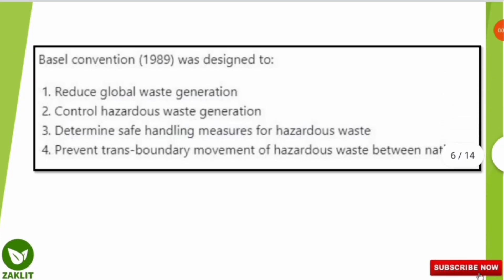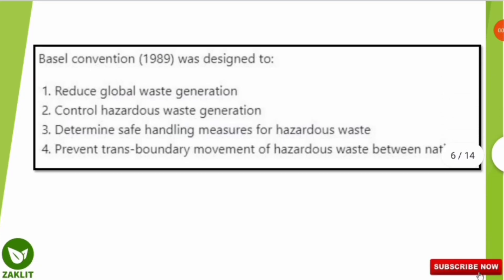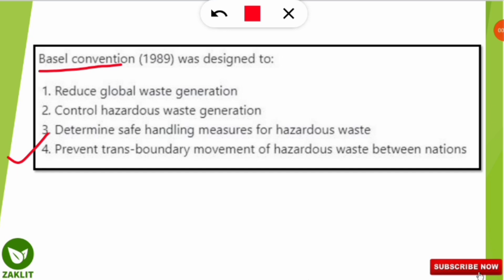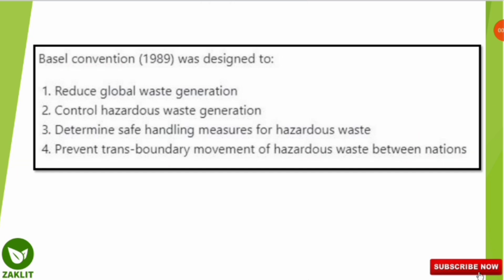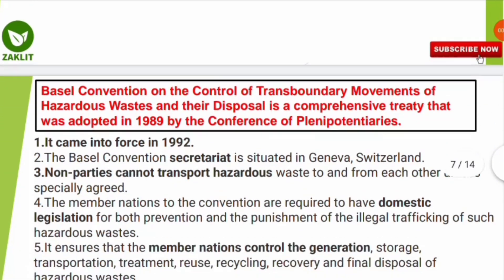The next question was about the Basel Convention, with four complicated options. The correct option is option number four: the Basel Convention was designed to prevent the transboundary movement of hazardous waste between nations. We will now cover everything about the Basel Convention as it is one of the frequently asked questions.